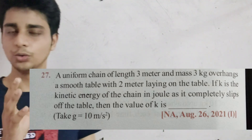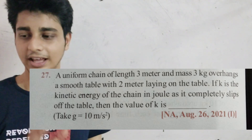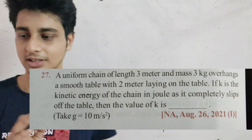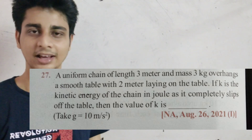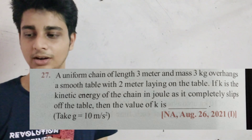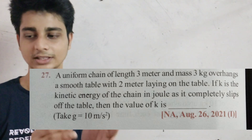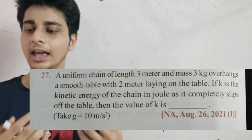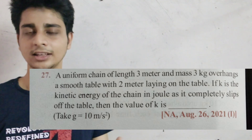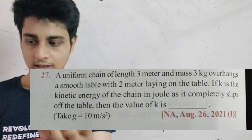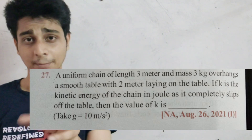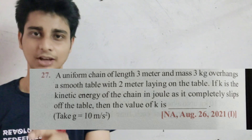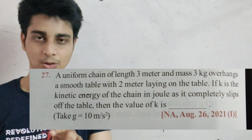A uniform chain of length 3m and mass 3kg overhangs a smooth table with 2m laying on the table. If k is the kinetic energy of the chain in joules as it completely slips off the table, then the value of k is.